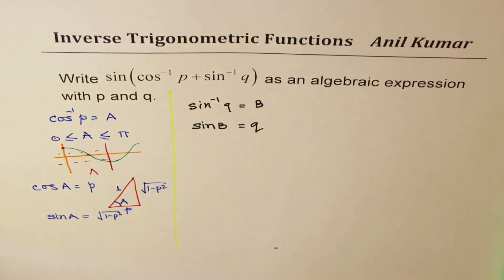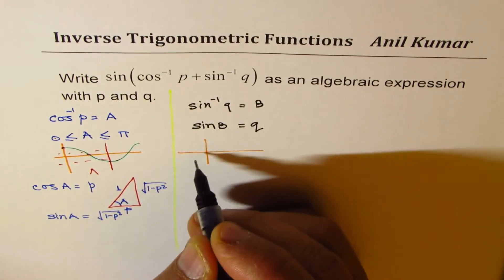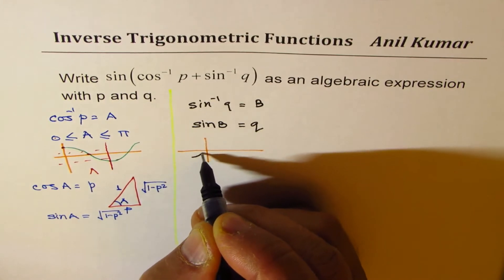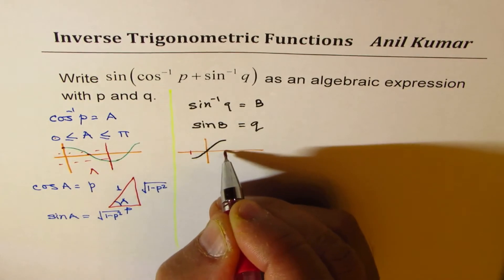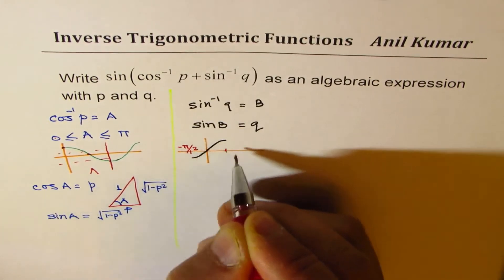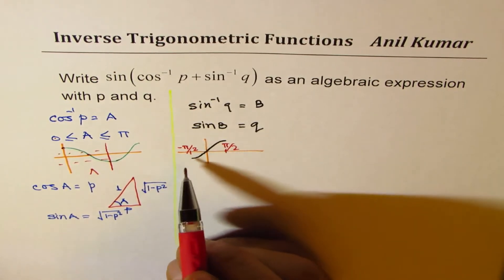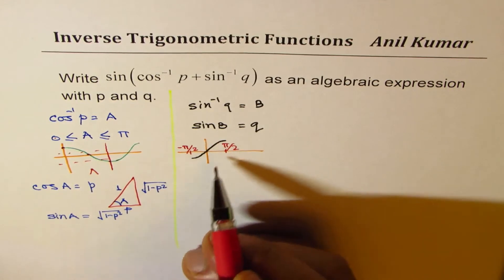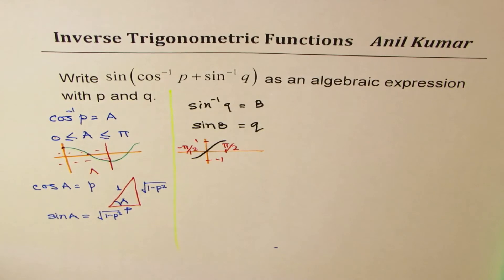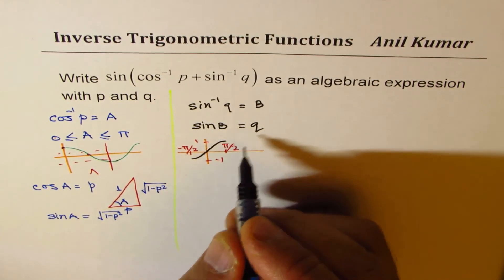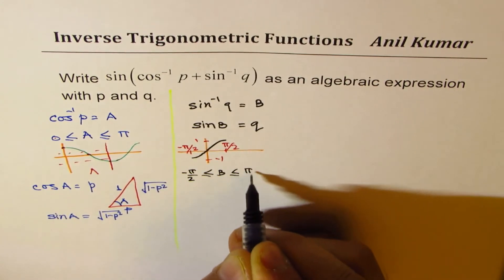Now, sin function, you can always find inverse of sin function if we restrict the domain of the sin function to -π/2 to +π/2. So whenever we talk about inverse of a sin function, we take the domain from -π/2 to +π/2. So during this interval, we have all the values of sin function from -1 to +1. So the value of angle B should be between -π/2 to +π/2.